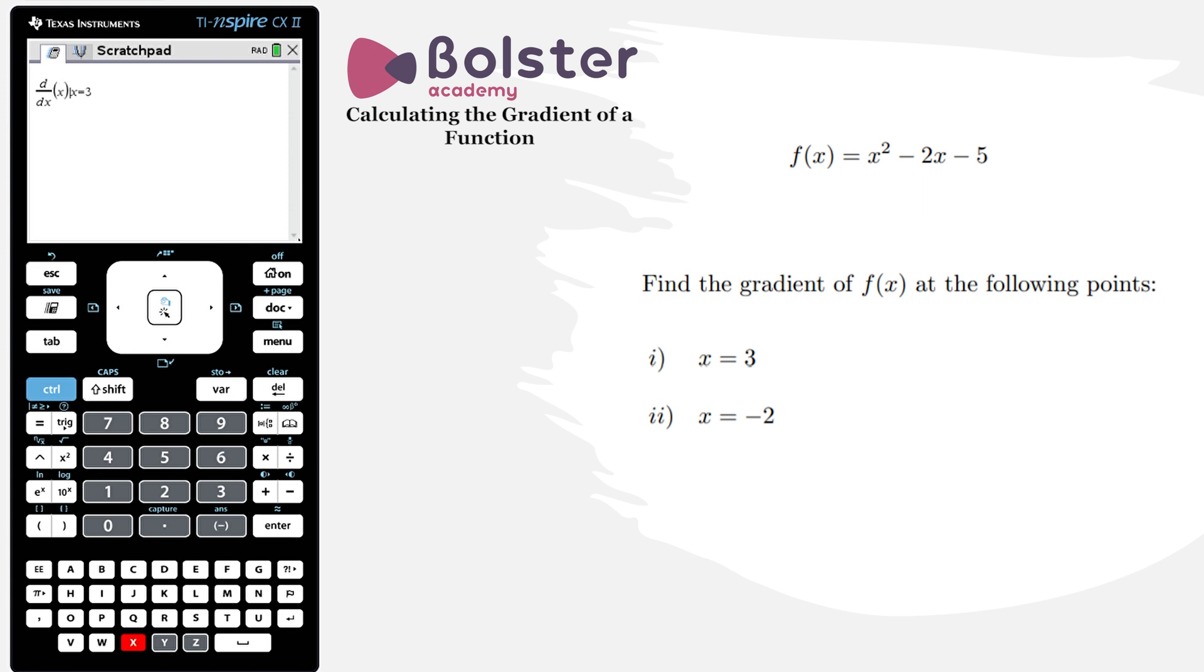So here I just fill in the function that I want to evaluate, so it's x squared minus two x minus five. I hit enter, and there's my answer, four. That's the value of the derivative of this function at x equals three. It's also the gradient of the graph of this function at x equals three.